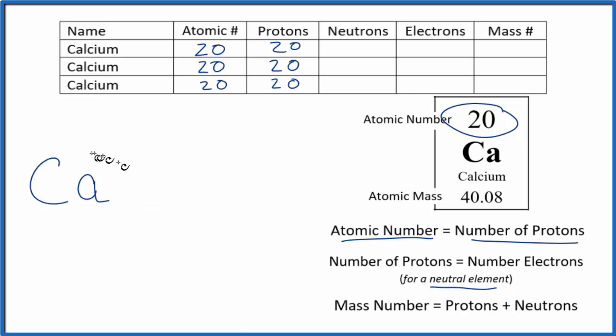So on the periodic table, the elements are considered to be neutral because they have the same number of protons and electrons. So we can say we have 20 electrons for each of these isotopes.